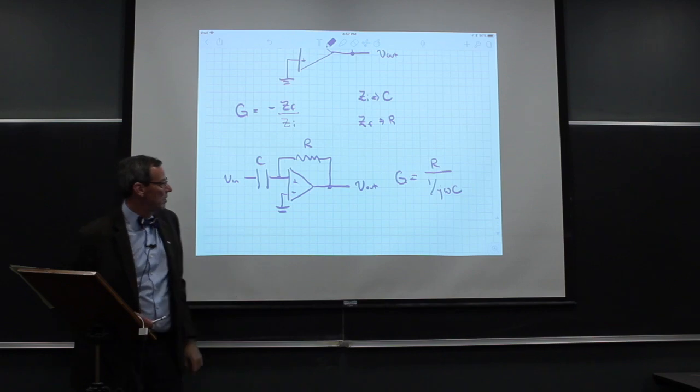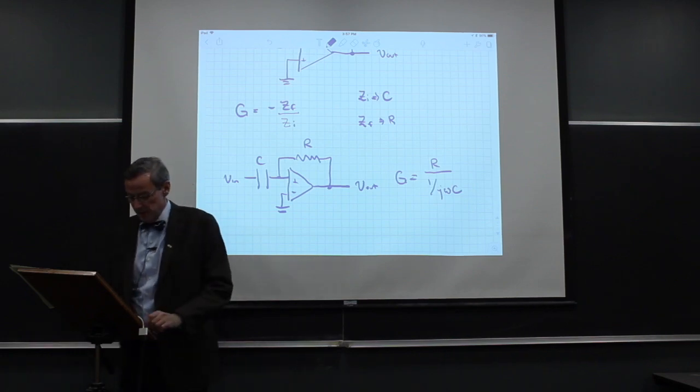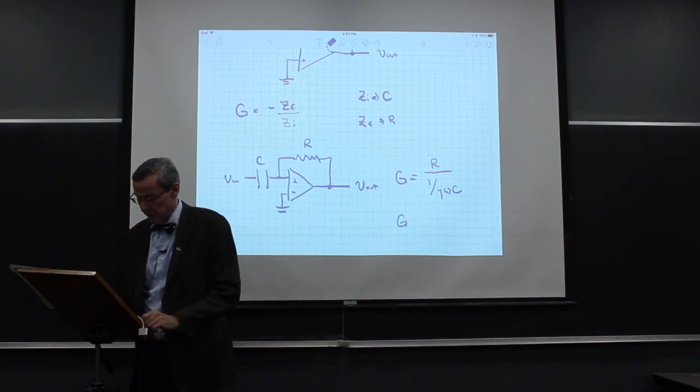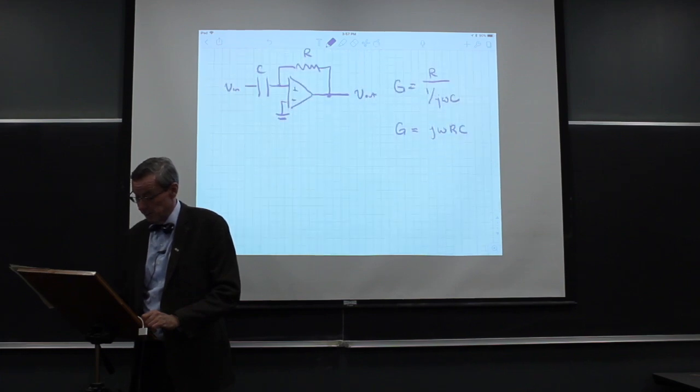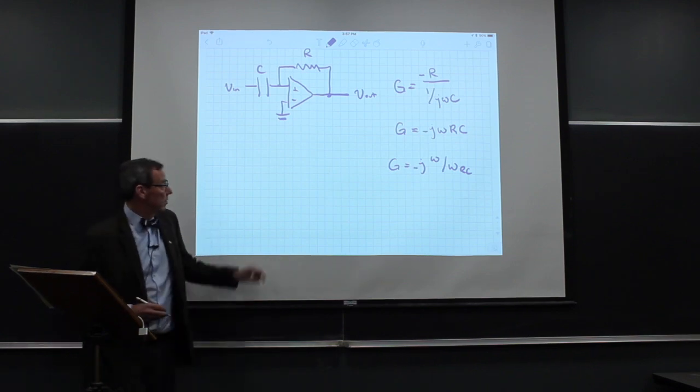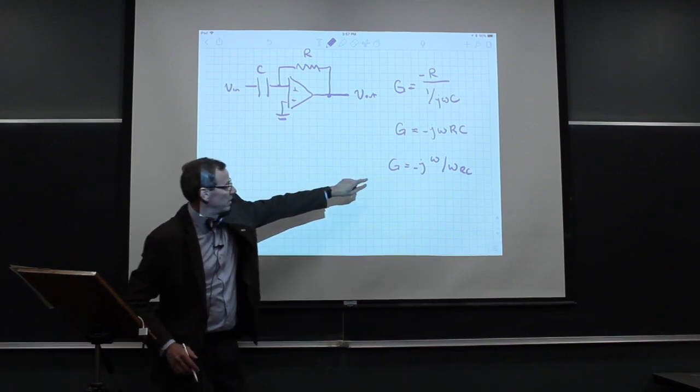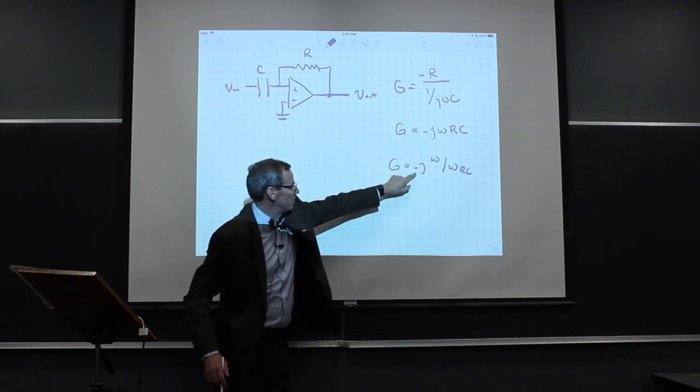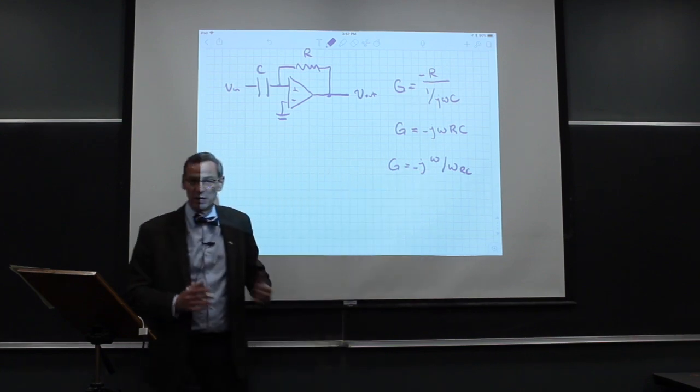So there's the feedback with the resistor capacitor. And that we can simply write as jωRC. And I have forgotten my minus sign, so we'll put that in there. So now we get defining ωRC to be 1 over RC. The gain is just minus jω over ωRC.